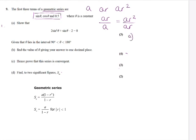So for part A, we're going to have cos θ over sin θ equals 0.5 over cos θ. So we can cross multiply, and we get cos squared θ equals 0.5 sin θ.